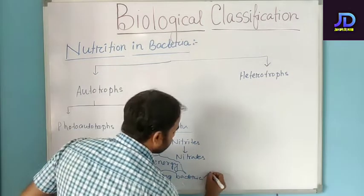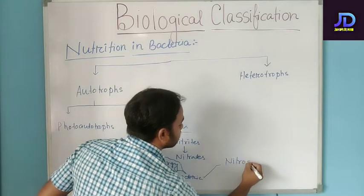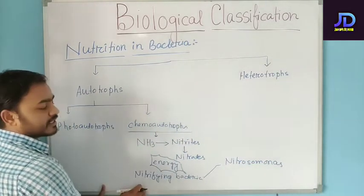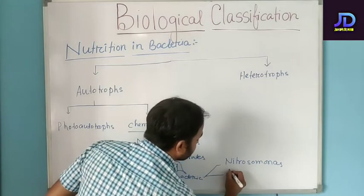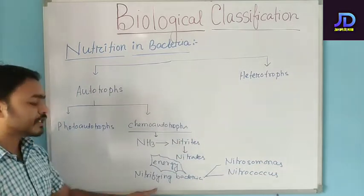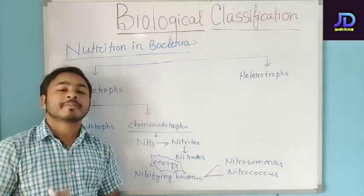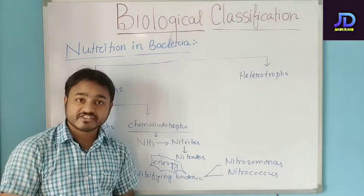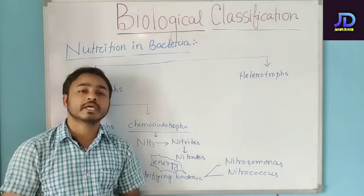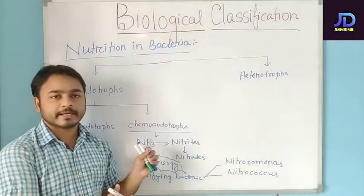Examples of nitrifying bacteria include Nitrosomonas and Nitrococcus. These bacteria will convert ammonia to nitrites and nitrites to nitrates, and in the whole process, energy will be produced and utilized by these bacteria.